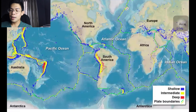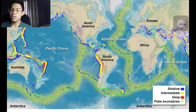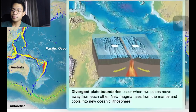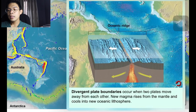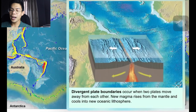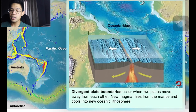Another belt system where many earthquakes occur extends through the world's oceans along the oceanic ridge system. Many of Earth's divergent plate boundaries, shown in yellow, and transform boundaries, shown in green, exist along this belt. Divergent plate boundaries occur when two plates move away from each other, and new magma rises from the mantle and cools into new oceanic lithosphere.